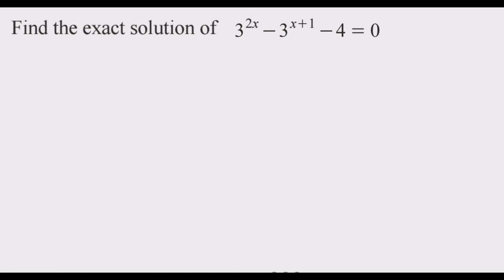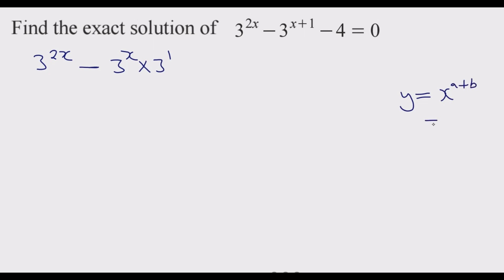On this function we can write it as 3 to the power 2x minus 3 to the power x multiplied by 3 to the power 1, because if you have y equal to x to the power (a+b), it is the same as x to the power a multiplied by x to the power b. That is the principle we are using, minus 4 multiplied by x to the power 0, equals 0.